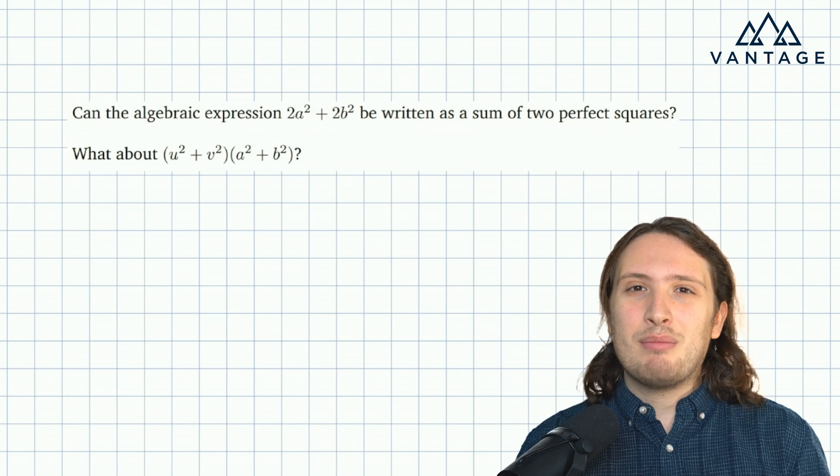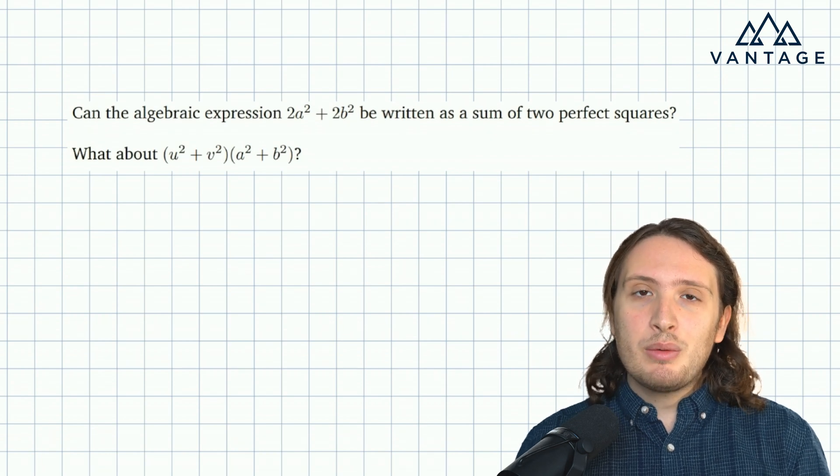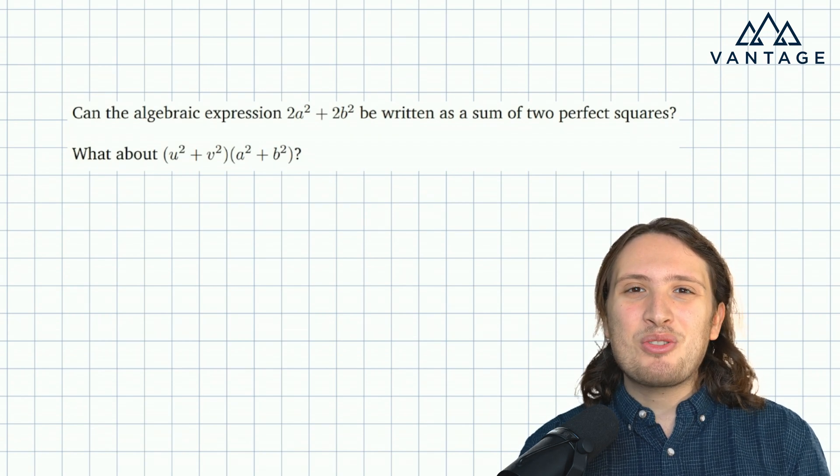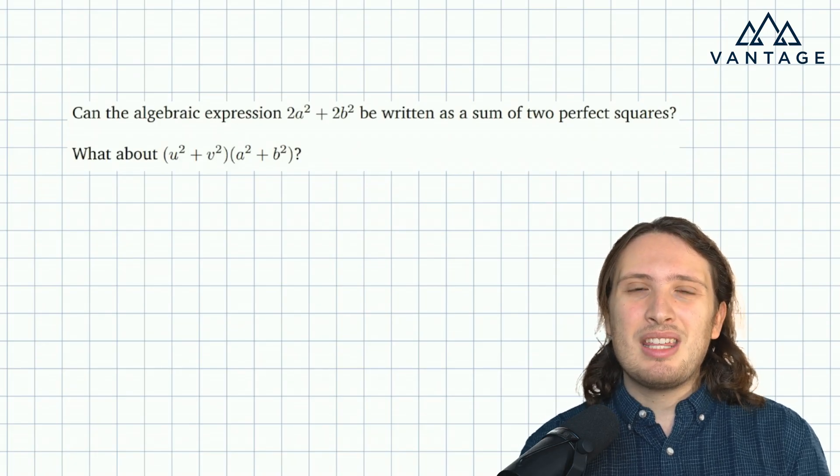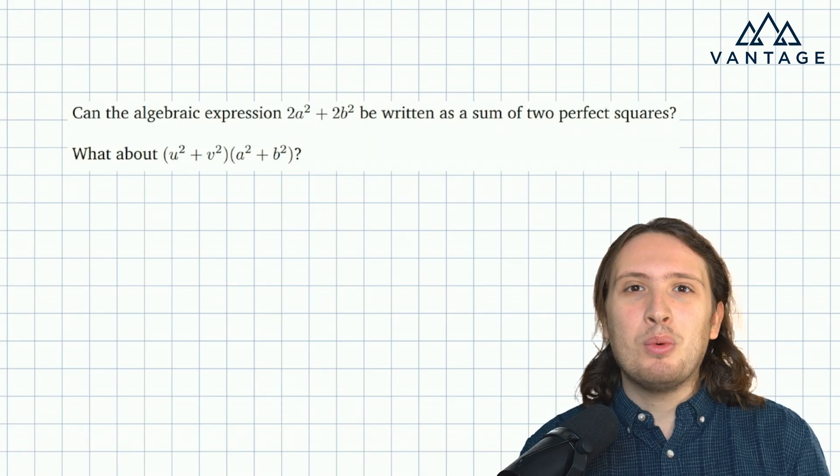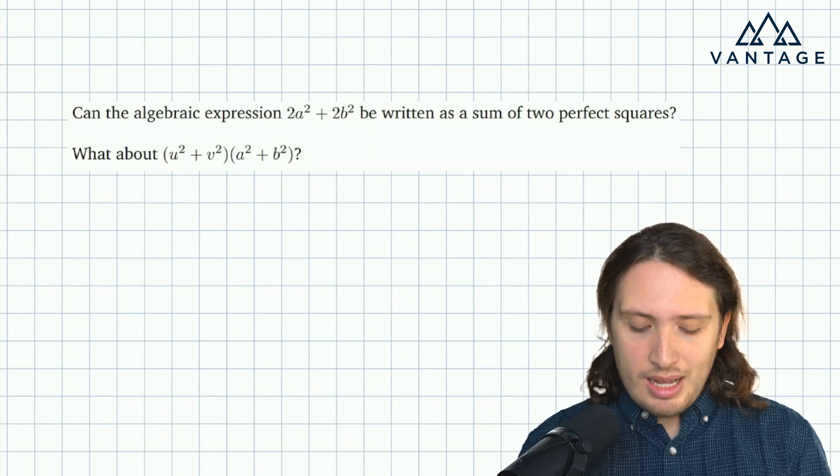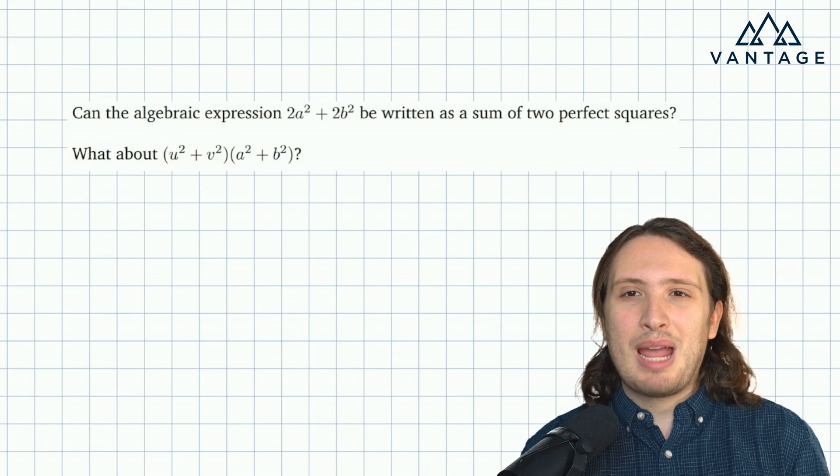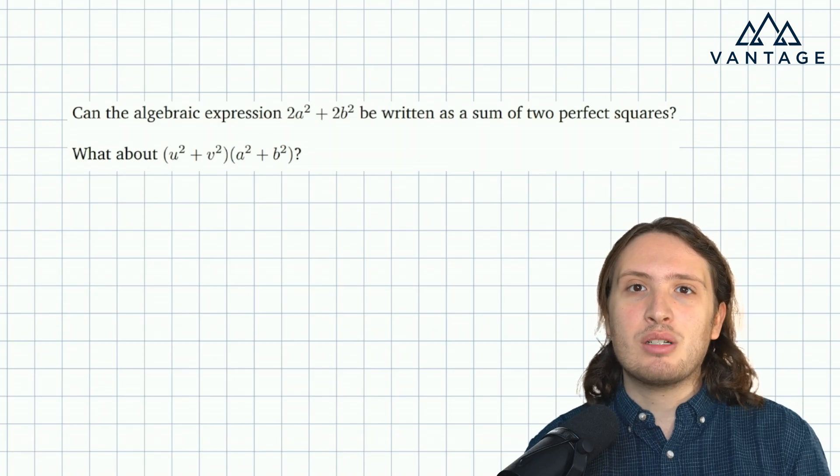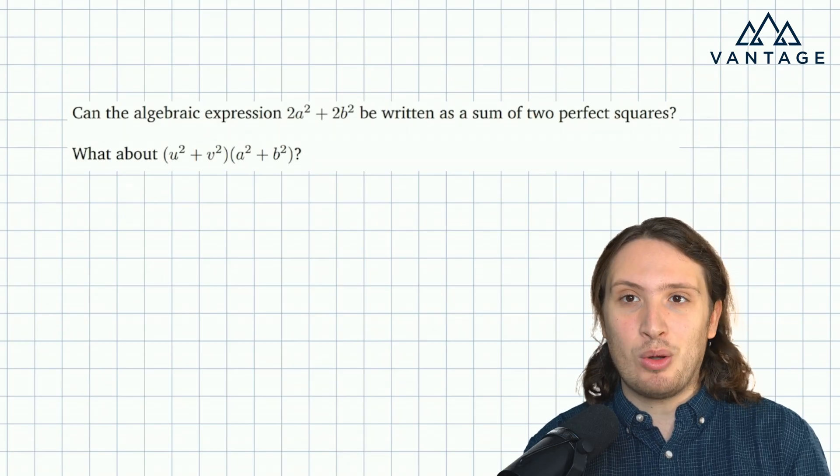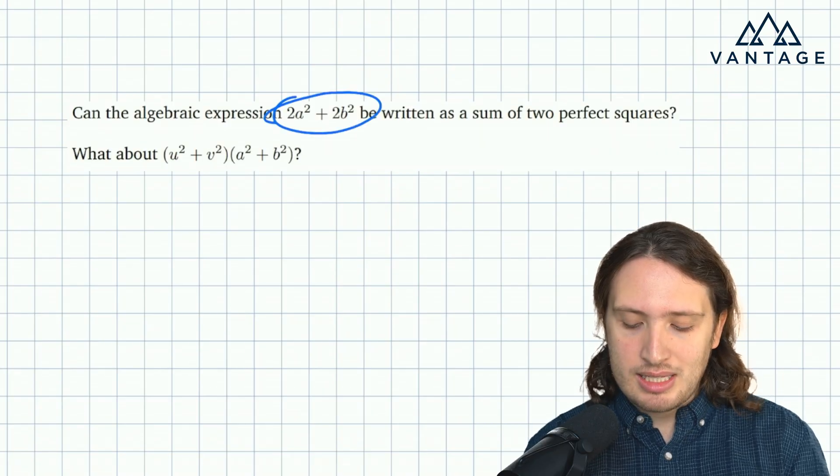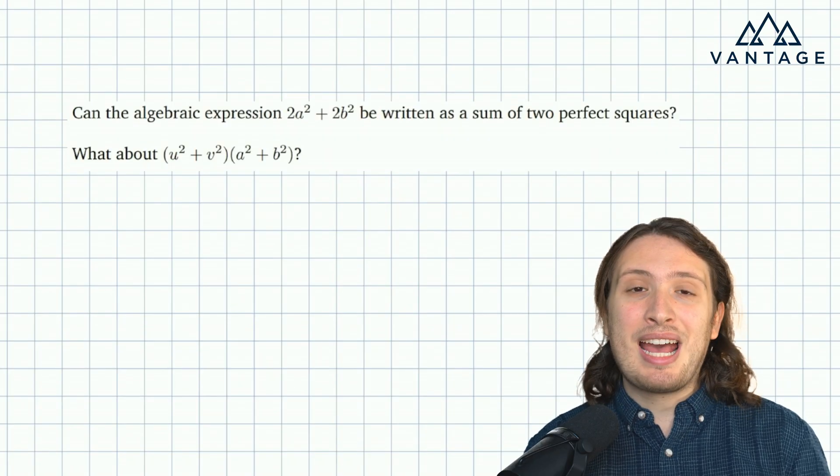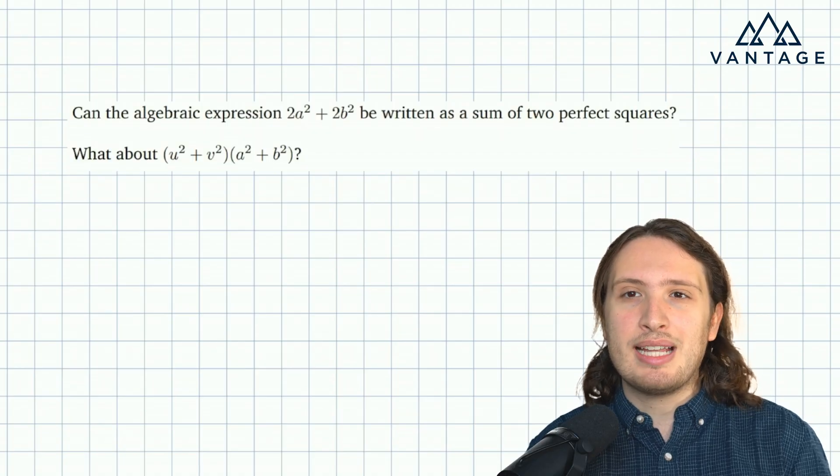So the answer, if there is one, must be simple. The question is, rather than trying to leap straight to an answer, which might not be easy to do, can we start to think about a step towards an answer? And a nice step towards an answer might be, well, what type of perfect squares could potentially be involved? If I am going to take a sum of two perfect squares to give me this, can I at least think of some candidates for some plausible squares I might use?